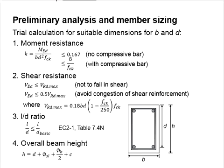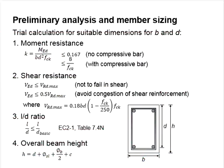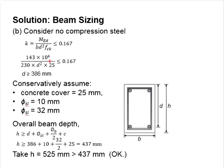Now, we follow through the calculation steps given in these slides. First, we compute the factor k. Assuming there is no compression reinforcement bar, therefore, the k is limited by 0.167.